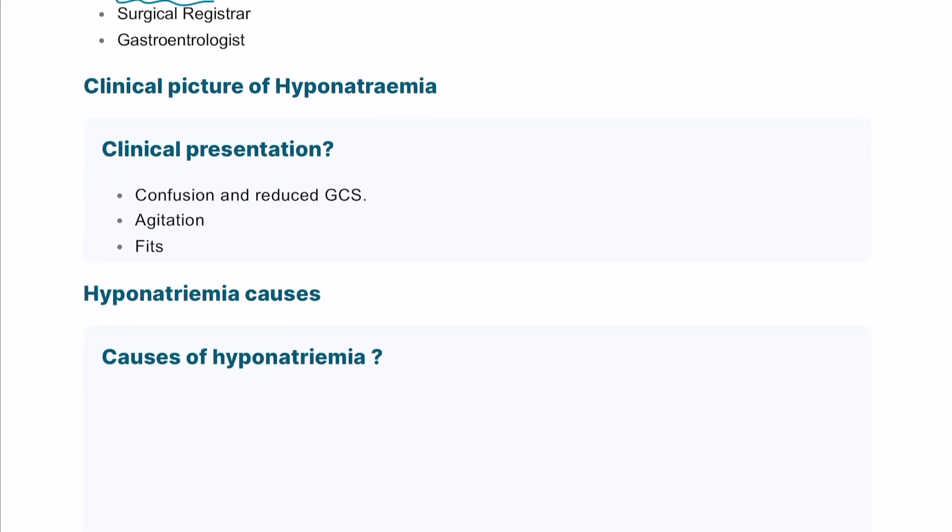This takes us to electrolyte imbalance, starting with hyponatremia. What is the clinical picture of hyponatremia? Sodium is mainly brain-related and potassium is likely heart-related. Sodium abnormalities can lead to confusion, agitation, or even seizures.